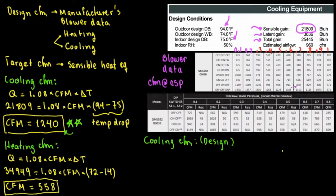At 0.7 inches of water column, the maximum we can obtain is 1,150 CFM, so there might be issues — it's not safe. We need 1,240 CFM, plus the installation is not 100% perfect. We also need to consider that homeowners sometimes forget to change the air filter, which increases resistance and decreases CFM. We need to lower the resistance, which means targeting 0.5 inches of water column.